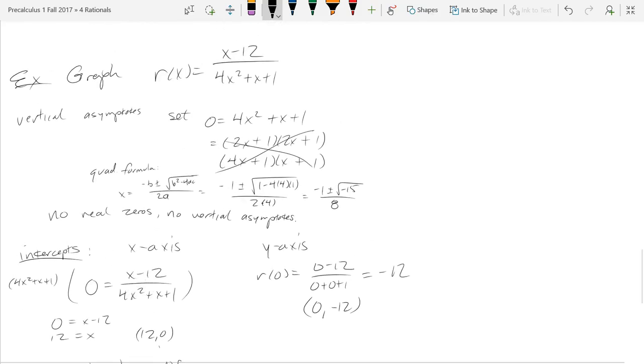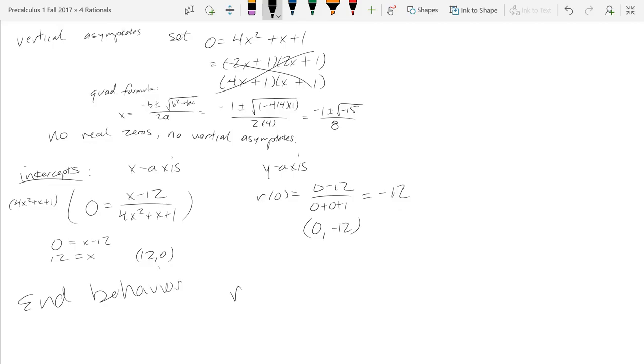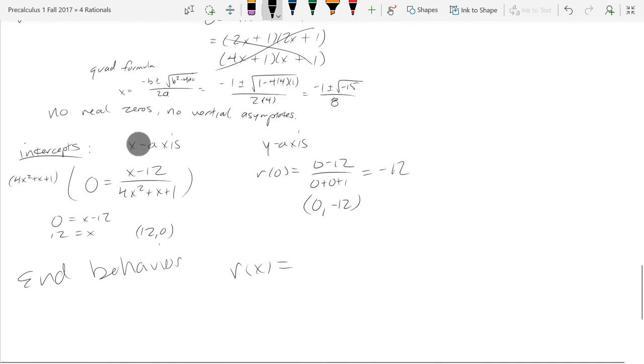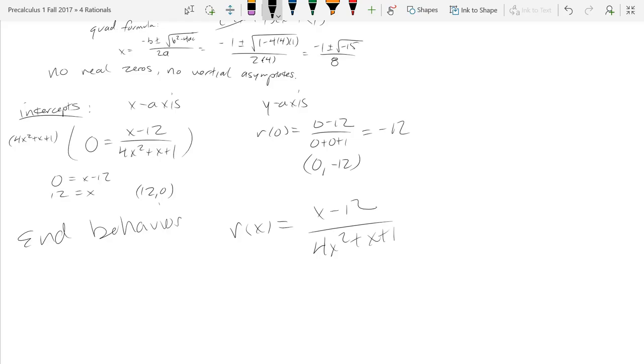So you're looking at highest powers, so r(x). I'll rewrite here. (x-12) over (4x² + x + 1). So end behavior, you're going to throw out the minus 12 and every low power on the bottom. So this reduces to 1 over 4x, or you could write it as 1/4 times 1 over x.